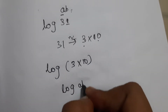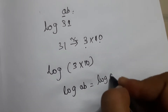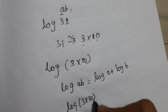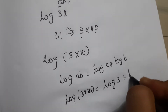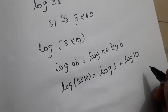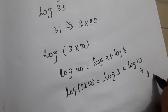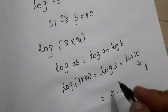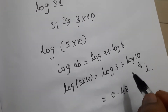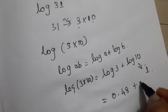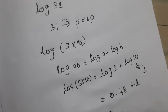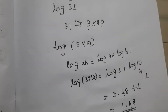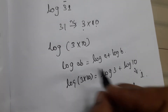Now log(3 × 10) is in the log(a×b) format, so it equals log 3 plus log 10. We know log 10 = 1 and log 3 = 0.48, so the answer is 0.48 + 1 = 1.48. Therefore, log(31) is approximately equal to 1.48.